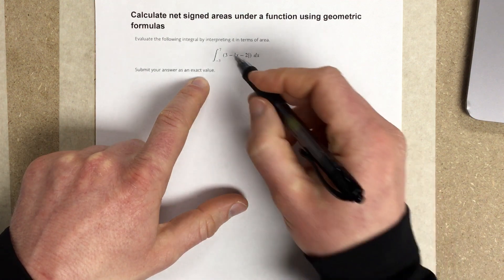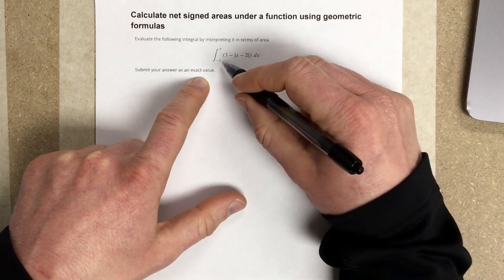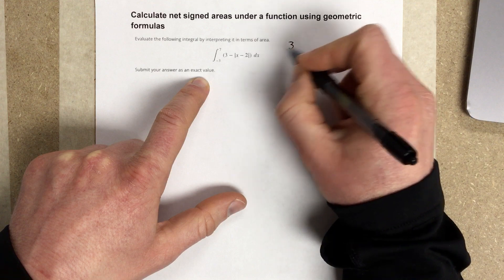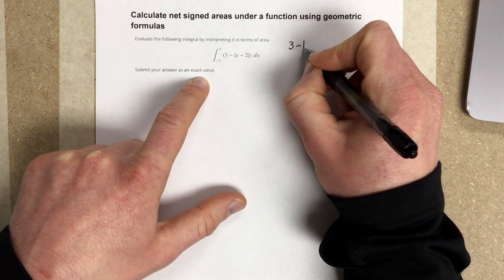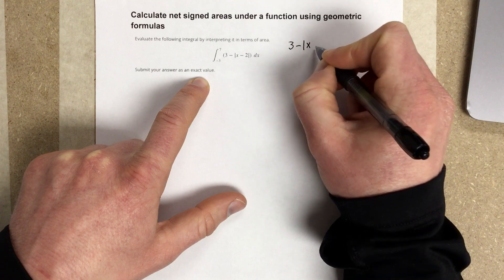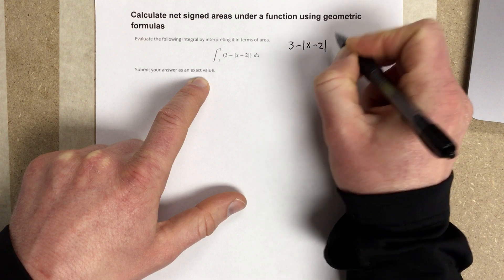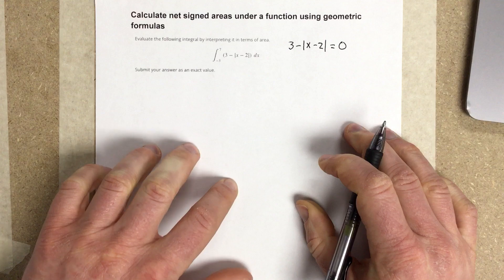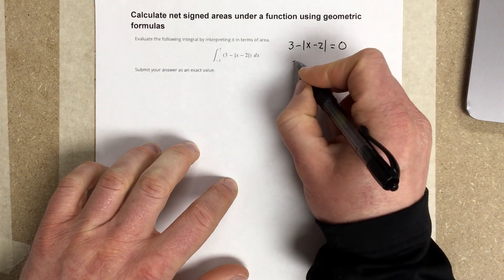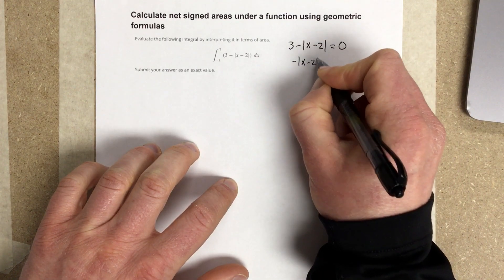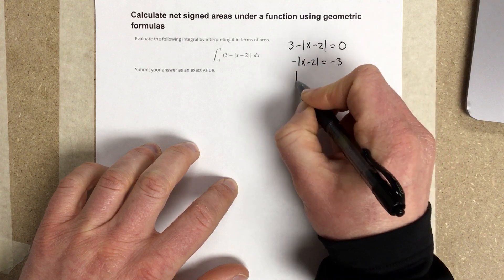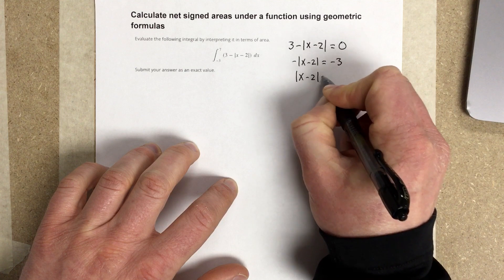So I'm going to assume that this is going to cross the x-axis a couple times in this region negative 3 to 7. So what I'm going to do is I'm going to find those areas by writing the function equal to 0. I want to find where it crosses the x-axis. I subtract 3, I get negative absolute value x minus 2 is equal to negative 3. I divide by negative, I get absolute value x minus 2 is equal to 3.